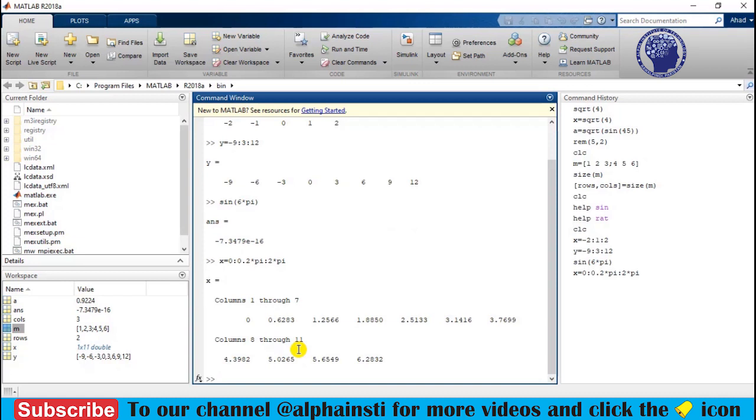And here you will get these values. Now you have to calculate the cos(θ), so I enter cos, and in the round bracket I enter the variable x, and here I have got the cos(θ) values with a step of 0.2π.